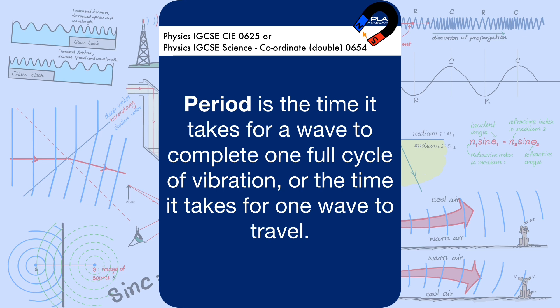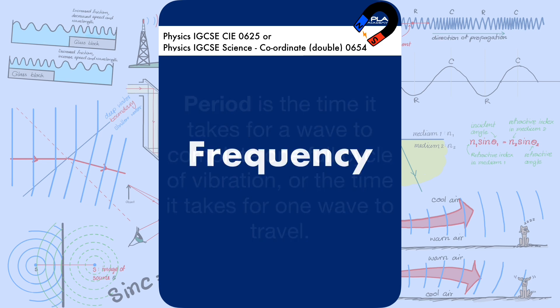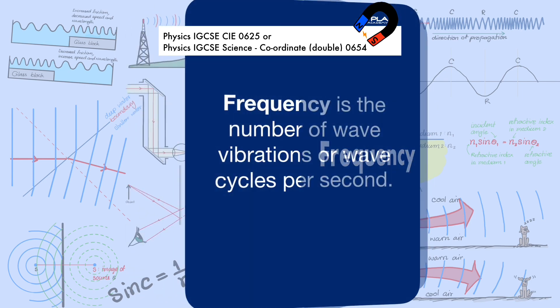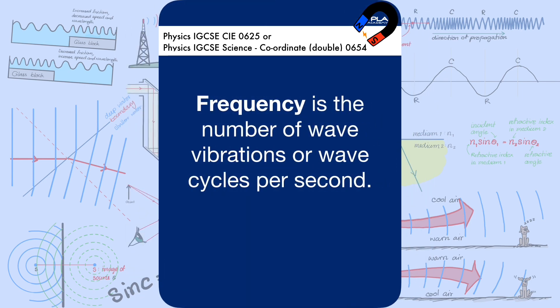Period is the time it takes for a wave to complete one full cycle of vibration, or the time it takes for one wave to travel. Frequency is the number of wave vibrations or wave cycles per second.